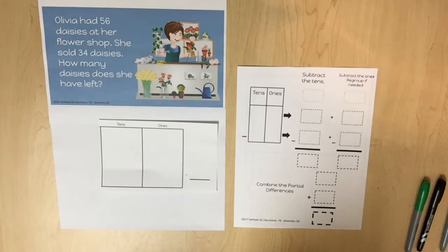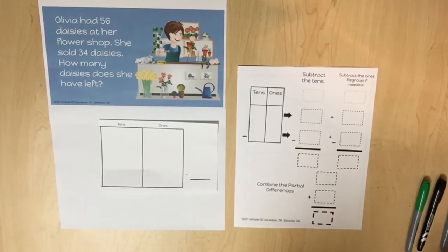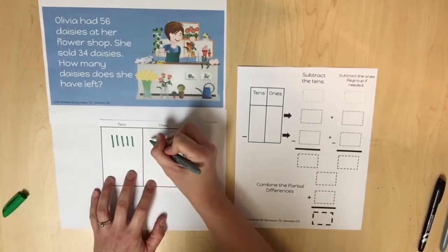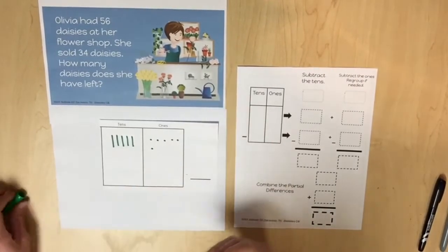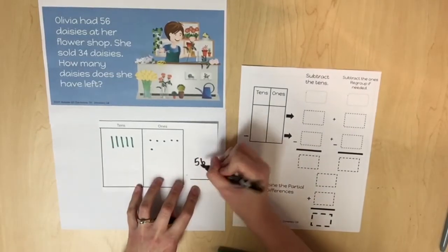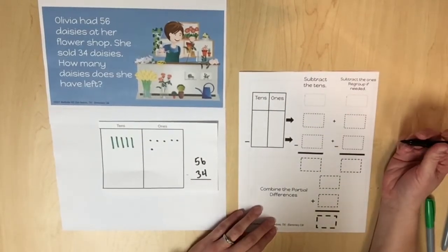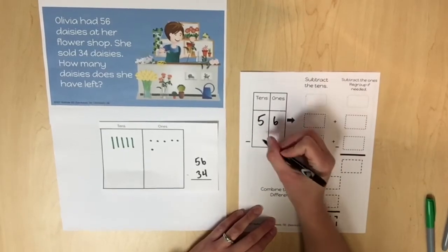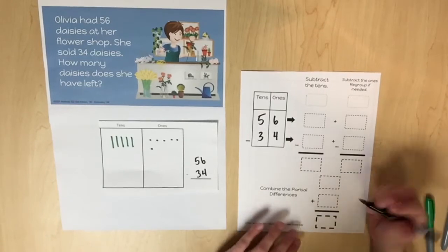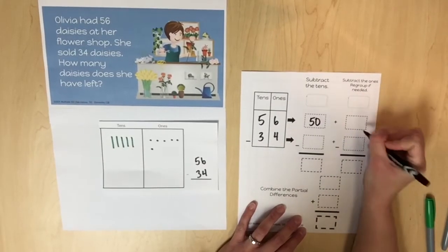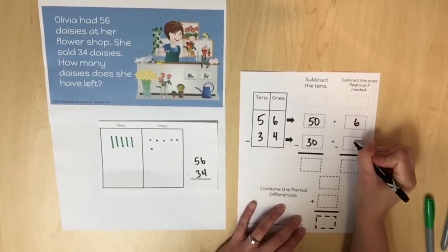Olivia had 56 daisies at the start of the problem and then a change occurred when she sold 34 daisies. In order to determine the result, subtraction will be used. To create a pictorial representation, 56 should be represented on a place value chart. The start and change values are also recorded on the partial differences template: 56 and we need to subtract 34. These values should be decomposed into the values of the tens and the values of the ones: 50 and 6, 30 and 4.